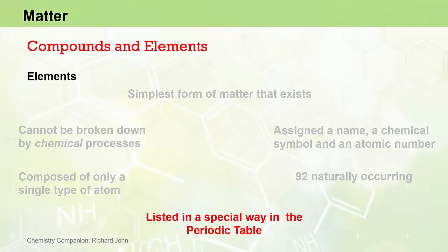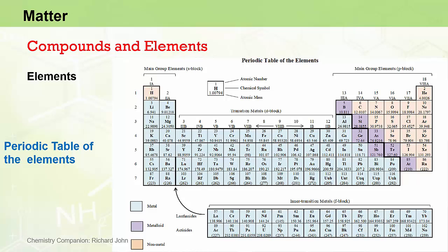The elements are also listed in a special way in the periodic table. Now, we'll examine the structure, the function and the properties of the periodic table in more detail later. But for now, it is useful to know that the elements are listed in 18 vertical columns, which we call groups, and 7 horizontal rows, which we call periods. Most importantly, each element within a group shares similar physical and chemical properties and the position of an element in the periodic table can be used to predict its chemical and physical properties.